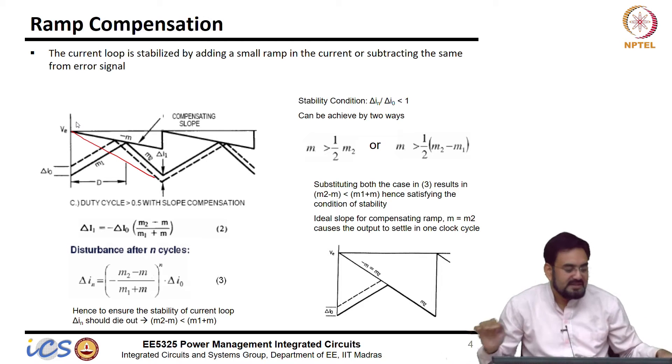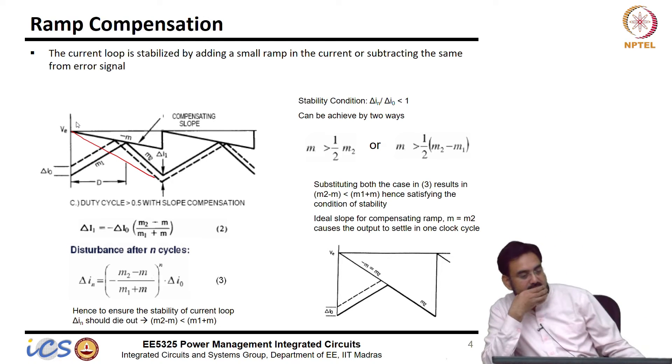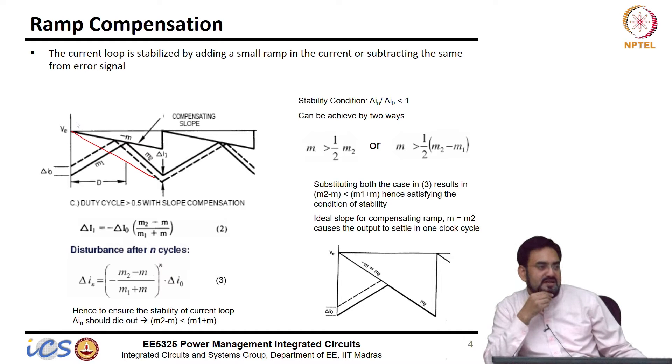The problem is something else here. See if I make this ramp much stronger, then your duty cycle decision is no longer taken by the peak current, then this ramp itself will decide everything. So, you are forcing a ramp.